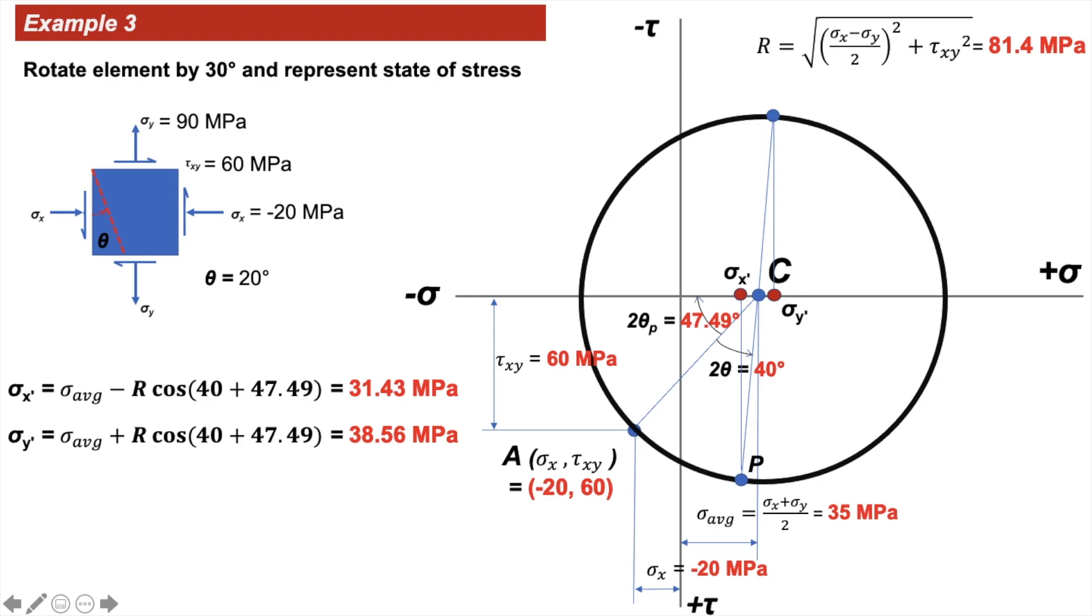which turns out to be 38.56 MPa. And τx'y' is the distance of P from the σ axis, which is R sin(40 + 47.49), giving us 81.32 MPa.